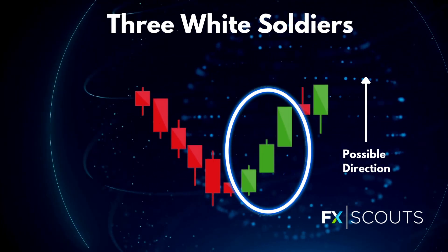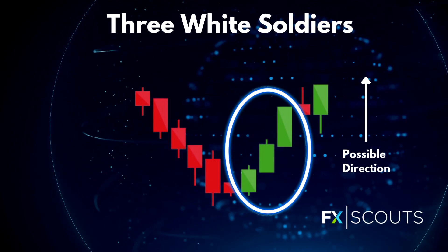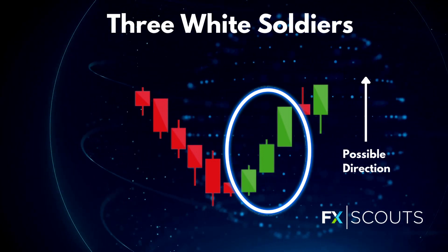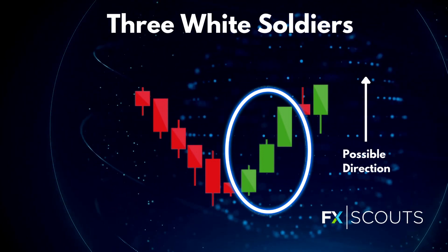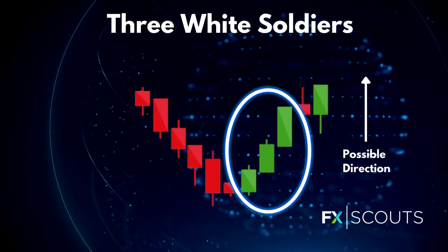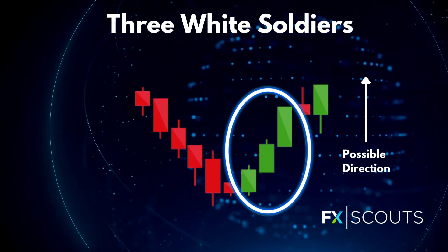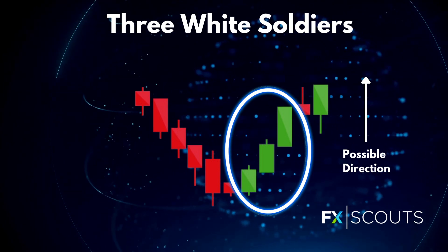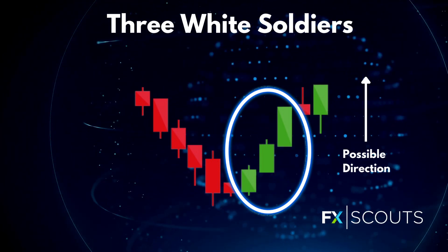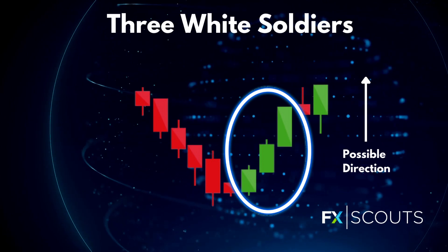Then you get three white soldiers and these occur over three candles. It consists of consecutive long green candles with small wicks which open and close progressively higher than the previous day. It's a very strong bullish signal that occurs after a downtrend and shows a steady advance of buying pressure.